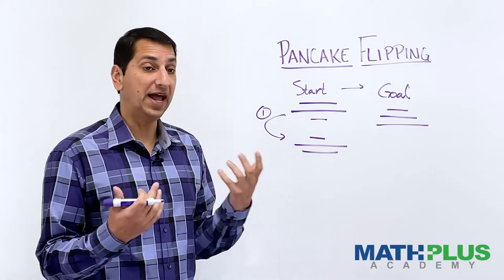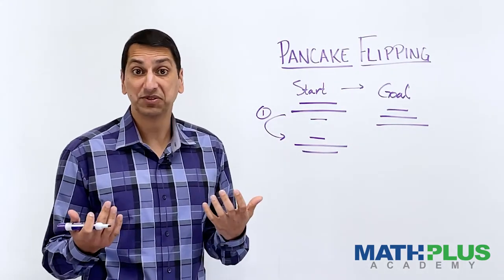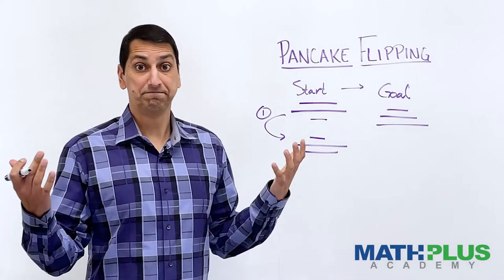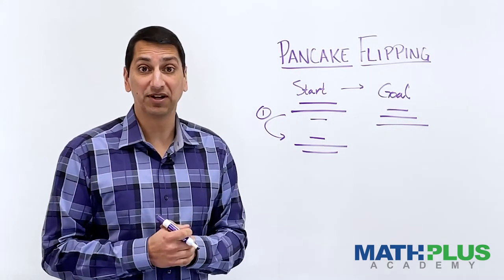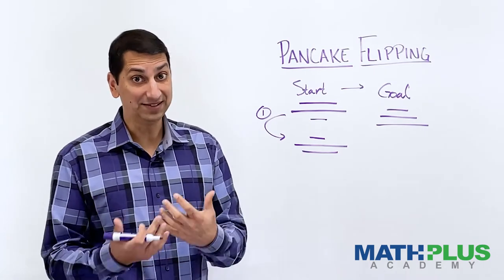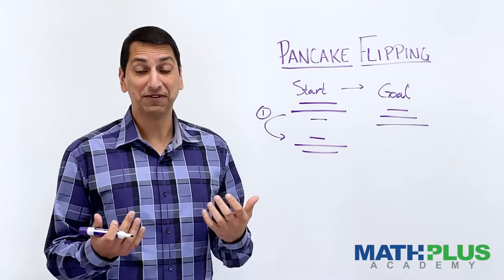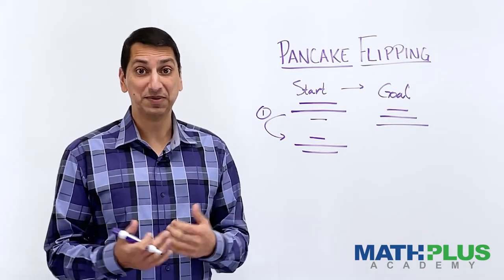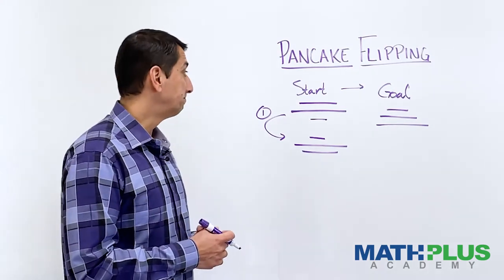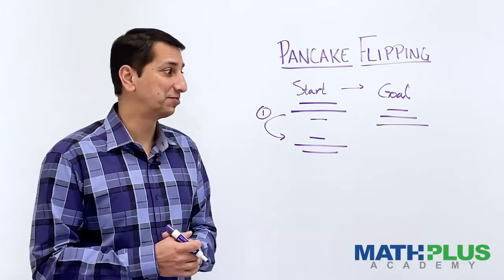And for any set, like all sets of three pancakes, what's the worst number that you could get? Lots of open questions here. I will tell you that not all of these questions have been answered by mathematicians yet. And in fact, back in the 70s, Bill Gates, who is the founder of Microsoft and now one of the richest people in the world, tackled this problem and actually wrote a paper about it. So this kind of has a neat history to this problem.